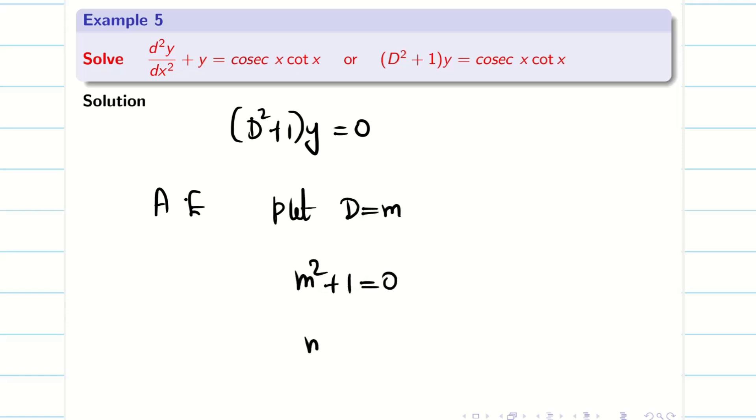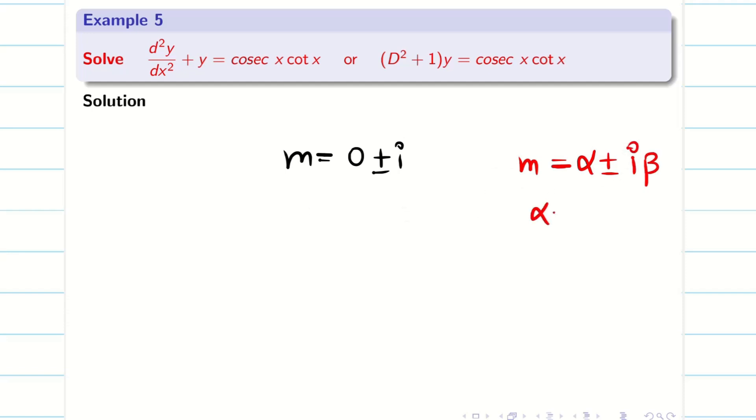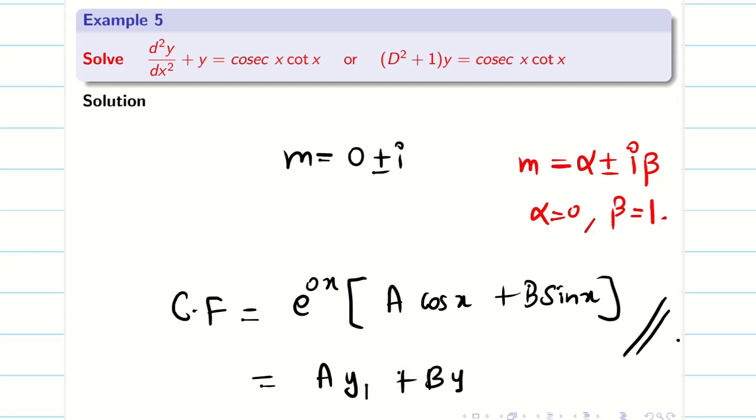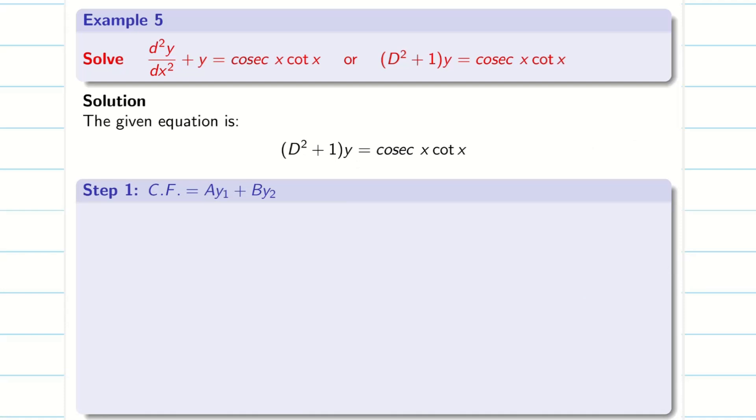To find the CF we have to make the right hand side 0. The auxiliary equation can be found by putting d equal to m. So m² + 1 = 0, m² = -1, m = ±i. Therefore my roots are 0 ± i. We know complex roots always occur in pairs. So here α is 0 and β is 1. So I can write the CF directly: e^(0x)(a cos x + b sin x). This is my CF: a·y₁ + b·y₂ where y₁ is cos x and y₂ is sin x.